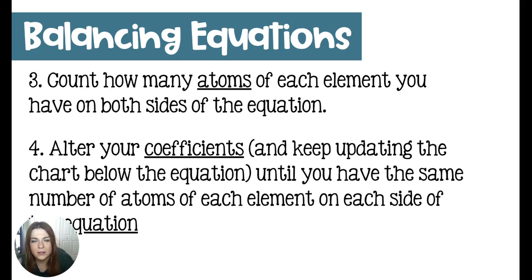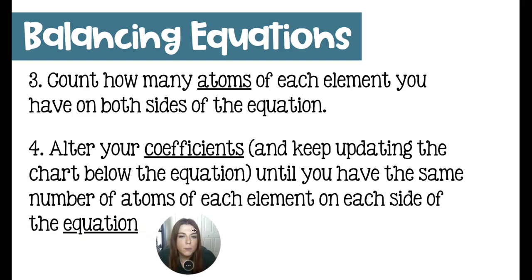It'll be: number of atoms — element — number of atoms, kind of like that. And then we are going to alter our coefficients using multiplication when we're counting, because a coefficient multiplies everything in the chemical formula. You'll see what I mean in a second.